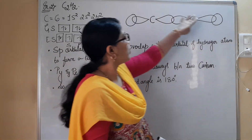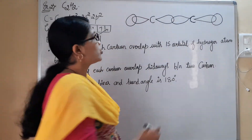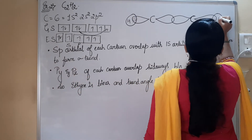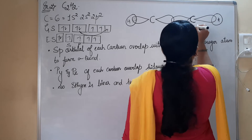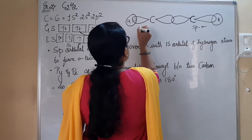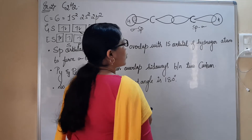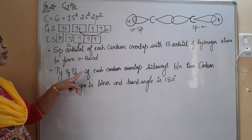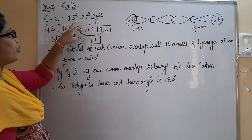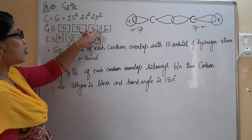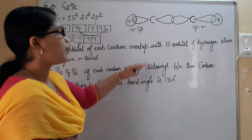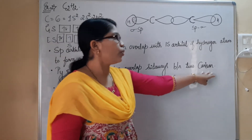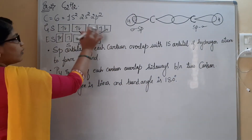The two hydrogen atoms are accommodated with the two carbon atoms. Here, an SP sigma bond is formed between the SP orbital of carbon and the s orbital of hydrogen. Next, the PY and PZ orbitals of each carbon atom overlap sideways with the corresponding PY and PZ orbitals of the other carbon atom.